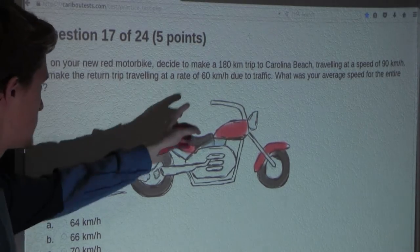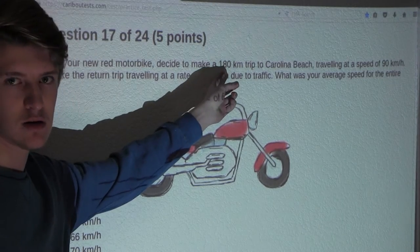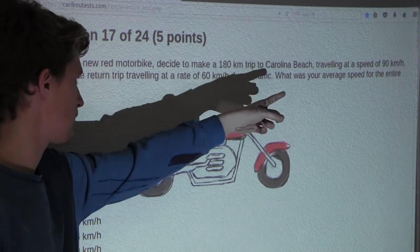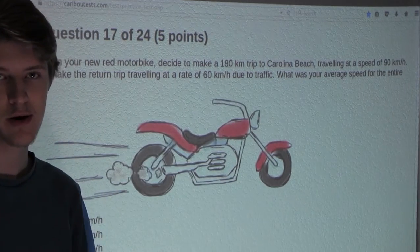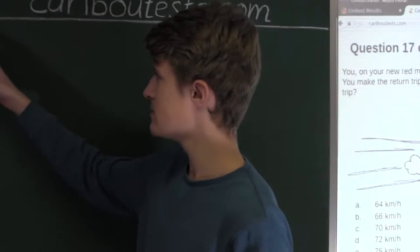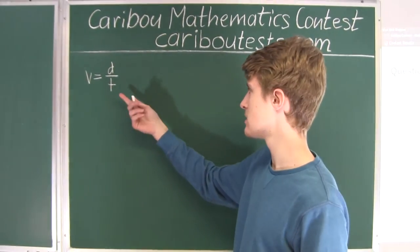So what we are given is our distance, which is 180 km, and we are also given our velocity, 90 km per hour. So now we have V and we have D, which means that we can figure out T.